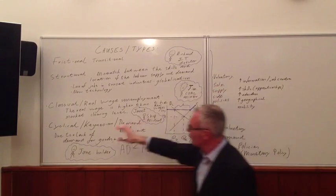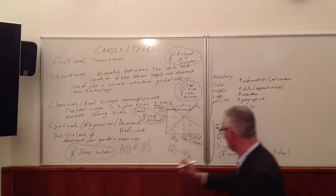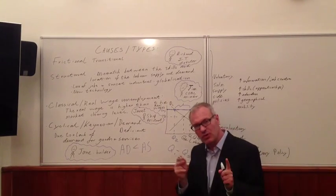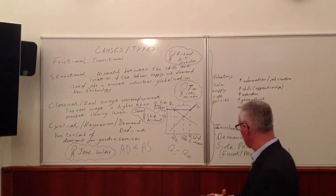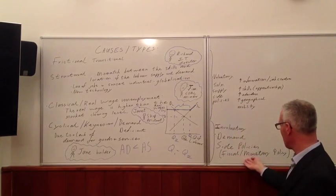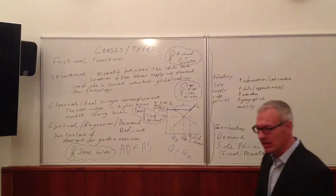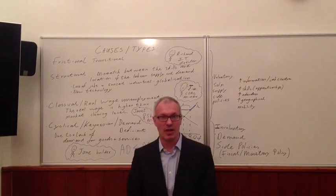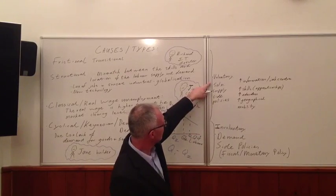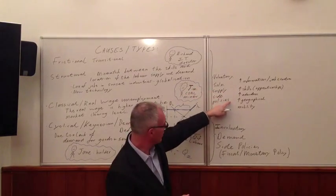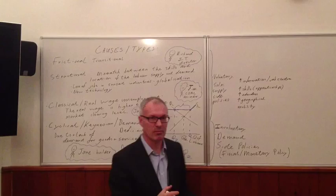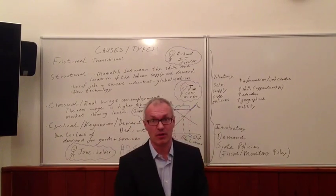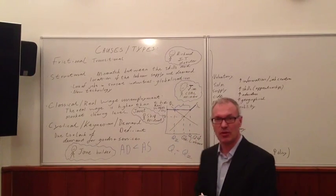If you've got cyclical unemployment, we'd call that involuntary, and what you need there are demand-side policies, probably a reflationary fiscal and/or monetary policy. That will solve the problem of involuntary unemployment. So the distinction between voluntary and supply-side policies and involuntary demand-side policies is a particularly useful one to use when you're writing answers to questions about unemployment.